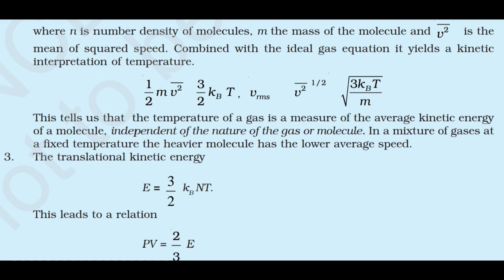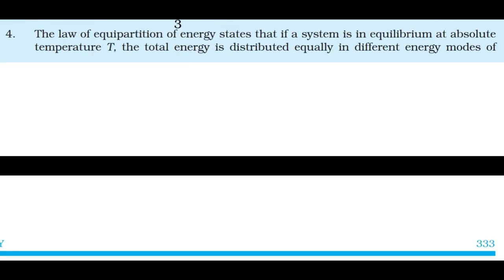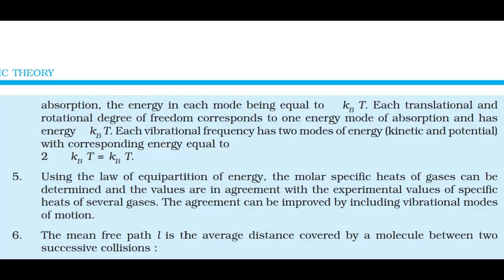The rms speed is vrms = √(v̄²) = √(3kBT/m). This tells us that the temperature of a gas is a measure of the average kinetic energy of a molecule, independent of the nature of gas. In a mixture of gases at a fixed temperature, the heavier molecule has the lower average speed. 3) The translational kinetic energy E = (3/2)kB·N·T, leading to PV = (2/3)E. 4) The law of equipartition of energy states that if a system is in equilibrium at absolute temperature T, the total energy is distributed equally among all energy modes, each mode having average energy ½kBT.